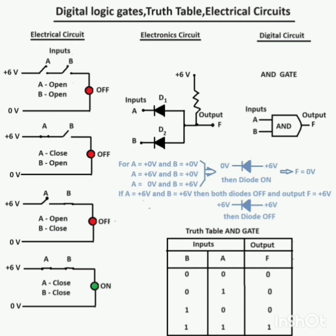The LED will be ON only when both inputs are ON. An electronic circuit is also given for the AND gate. The output remains OFF if any diode is ON.